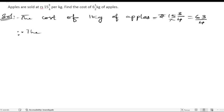The cost of now we will find out the cost of 6 and half kg. The cost of 6 and half kg of apples equals to rupees. We will multiply 63 by 4 into 6 and half.